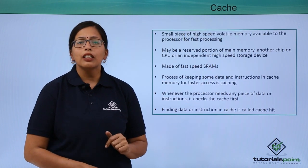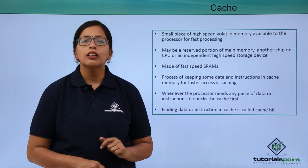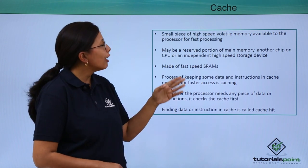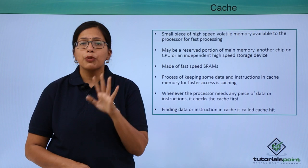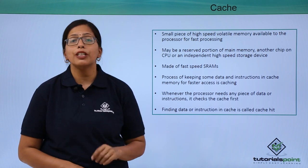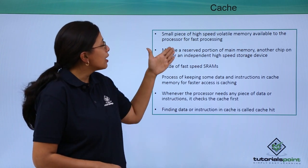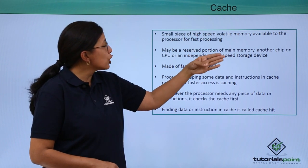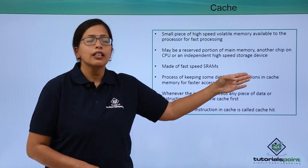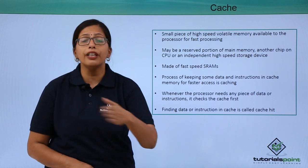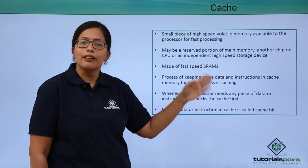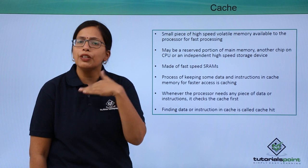Now let us look at the most special type of memory, which is the cache memory. It is a small piece of high speed volatile memory available to the processor for fast processing. When the processor needs to do very fast processing and has run out of RAM, cache memory is made available to it. It may be a reserved portion of the main memory, another chip on the CPU, or an independent high speed storage device. It is used only in special cases where very high speeds are required. It is made of fast speed static RAMs, so the data does not need to be refreshed.